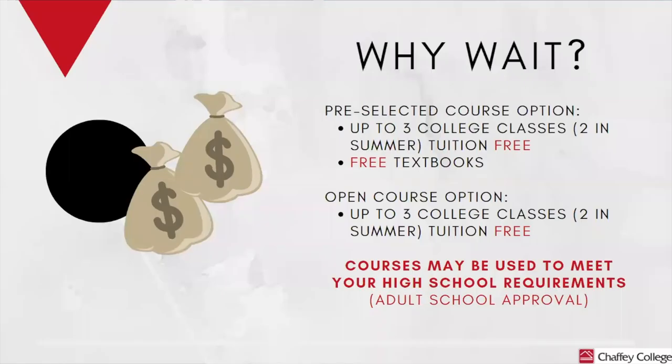Why wait? The pre-selected course option allows up to three college classes, or two in the summer, is tuition-free, and includes free textbooks. The open course option allows up to three college courses, or two in the summer, and is tuition-free. Courses may be used to meet your high school requirements — please see your adult school for approval.